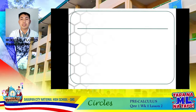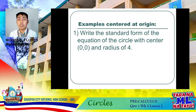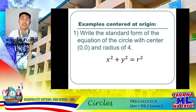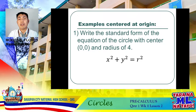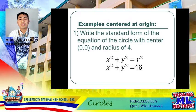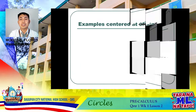Let's have some examples centered at the origin. Write the standard form of the equation of a circle centered at the origin with a radius of 4. We use x² + y² = R². Substituting R = 4 and squaring it, 4² = 16, so the equation is x² + y² = 16.